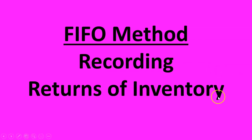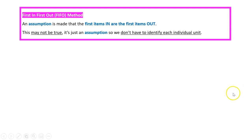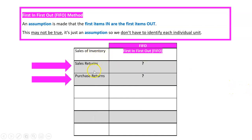A really difficult transaction for inventory is recording returns, so let's look at that with the FIFO method. FIFO stands for first in, first out — it's an assumption we make where the first items in are the first items out. It may not be true, it's just an assumption so we don't have to identify each individual unit. We're learning FIFO but we're actually not going to apply it for either of these returns.